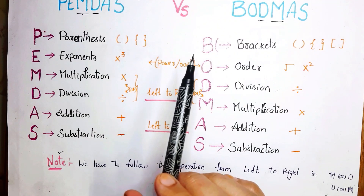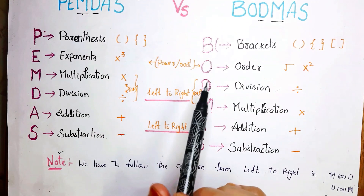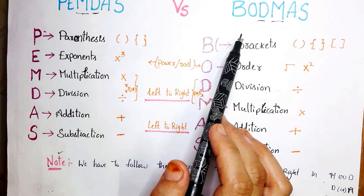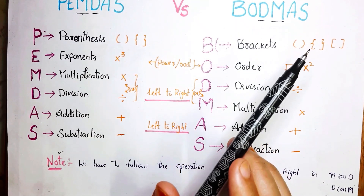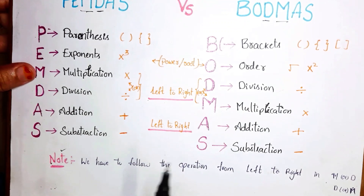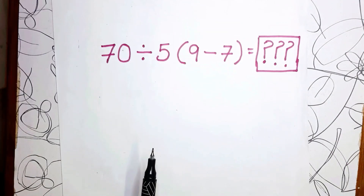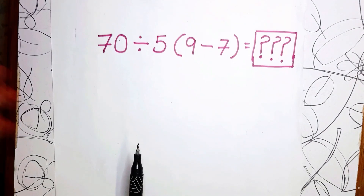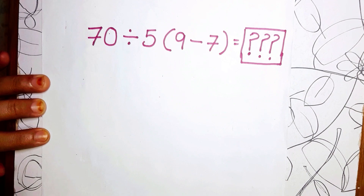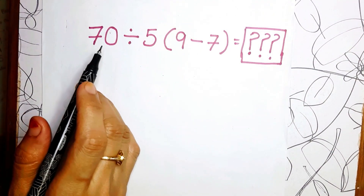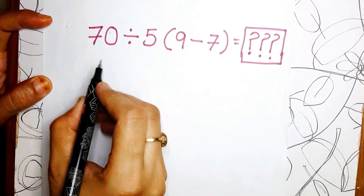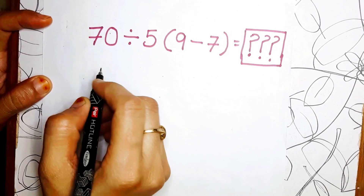According to the modern interpretation of order of operations, we have to use only the BODMAS rule and not PEMDAS. Now we'll see this by solving the same problem — I'll explain it using both methods, BODMAS and PEMDAS.